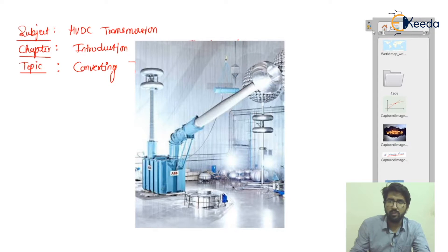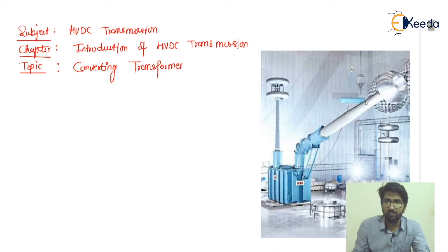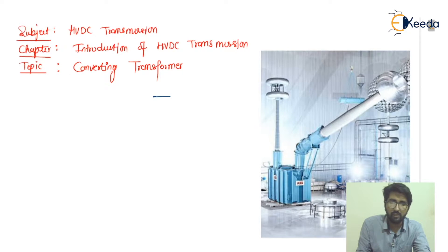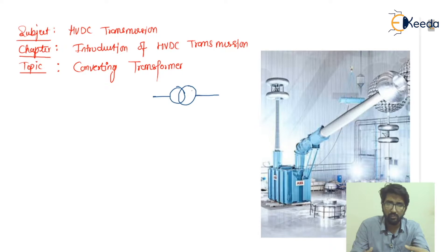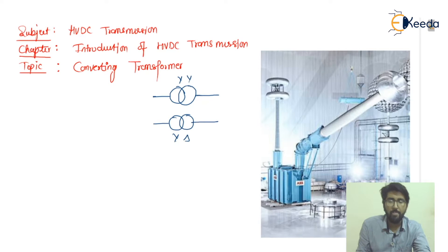If I talk about its basic representation, the converting transformer generally looks like this. This is the general representation and it is assembled with your converting units, or you can say the twelve pulse or six pulse converters, in which star-star and star-delta combinations are used.